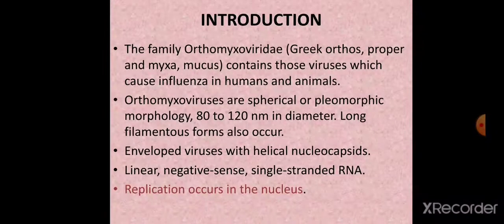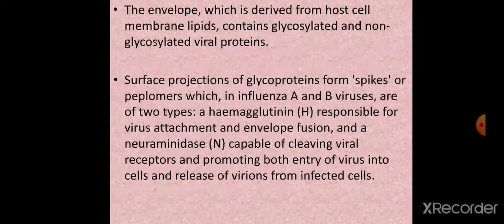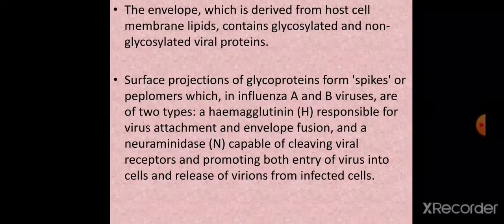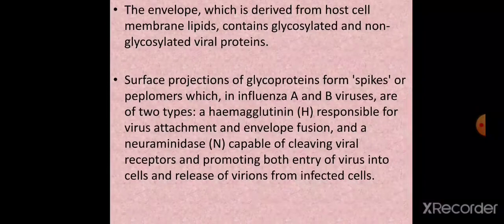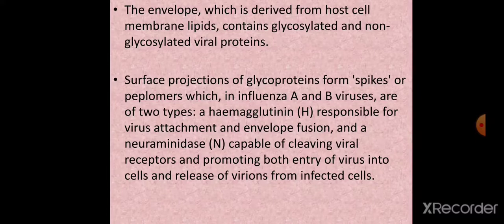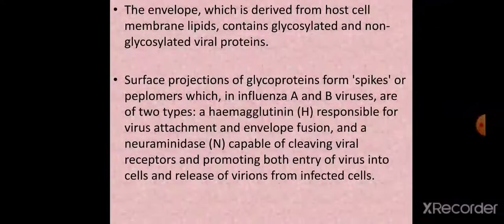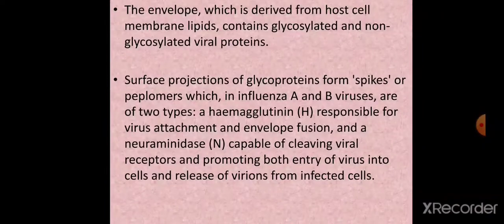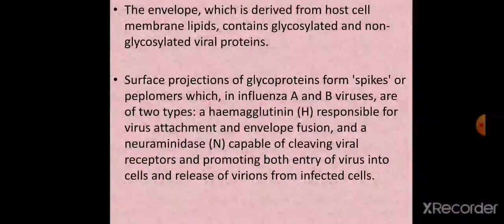The envelope of these viruses is derived from the host cell membrane lipids and contains both glycosylated and non-glycosylated viral proteins. Above the envelope, surface projections of glycoproteins — called spikes or peplomers — are present. In influenza A and B viruses, these are of two types: first, hemagglutinin (H), which is responsible for virus attachment onto the cell and envelope fusion.